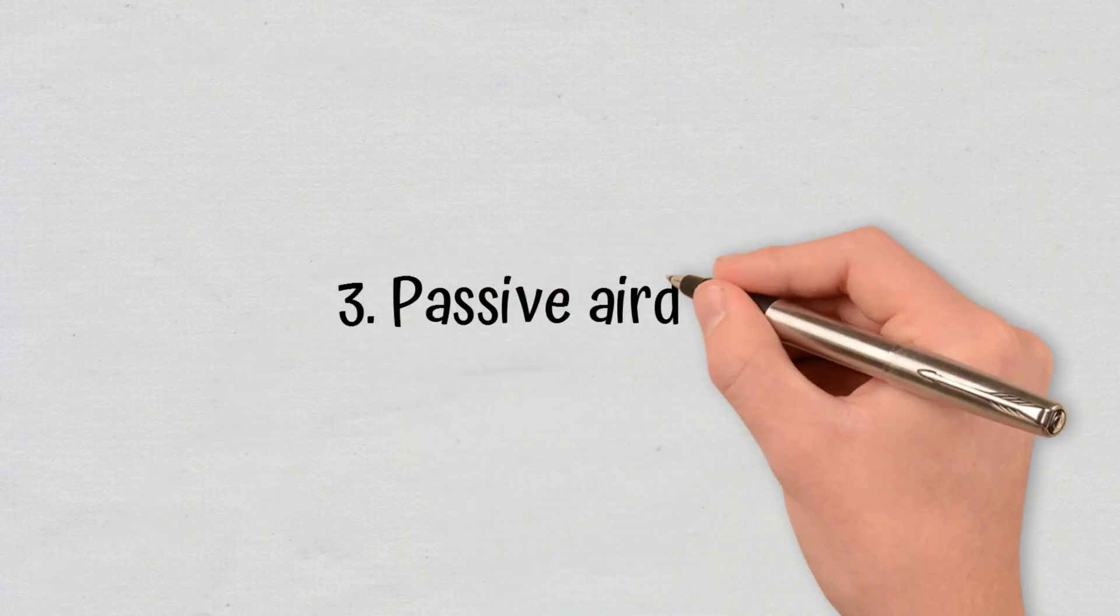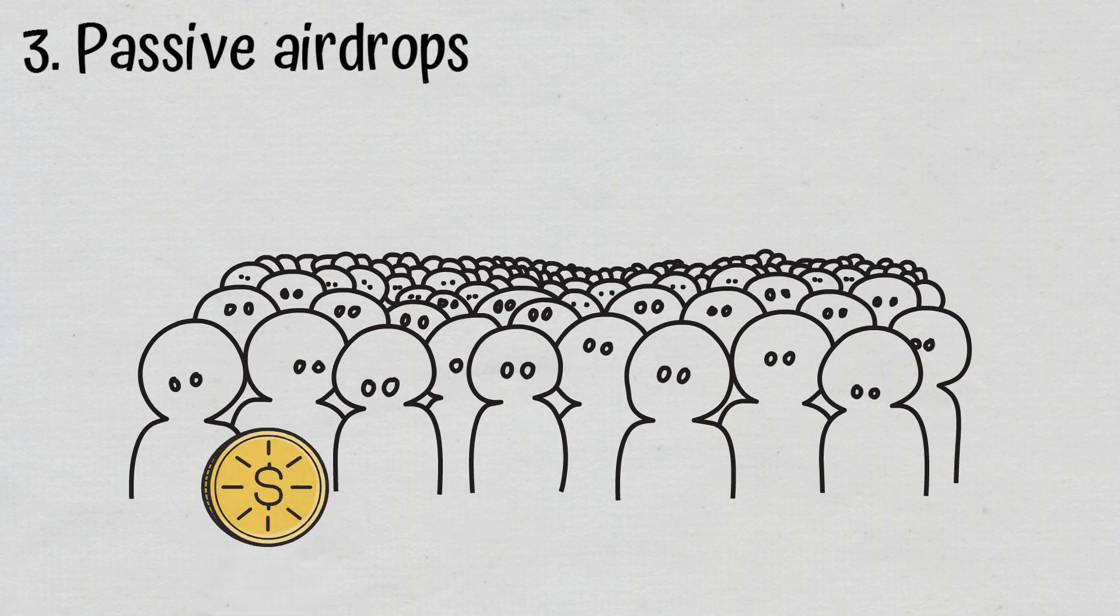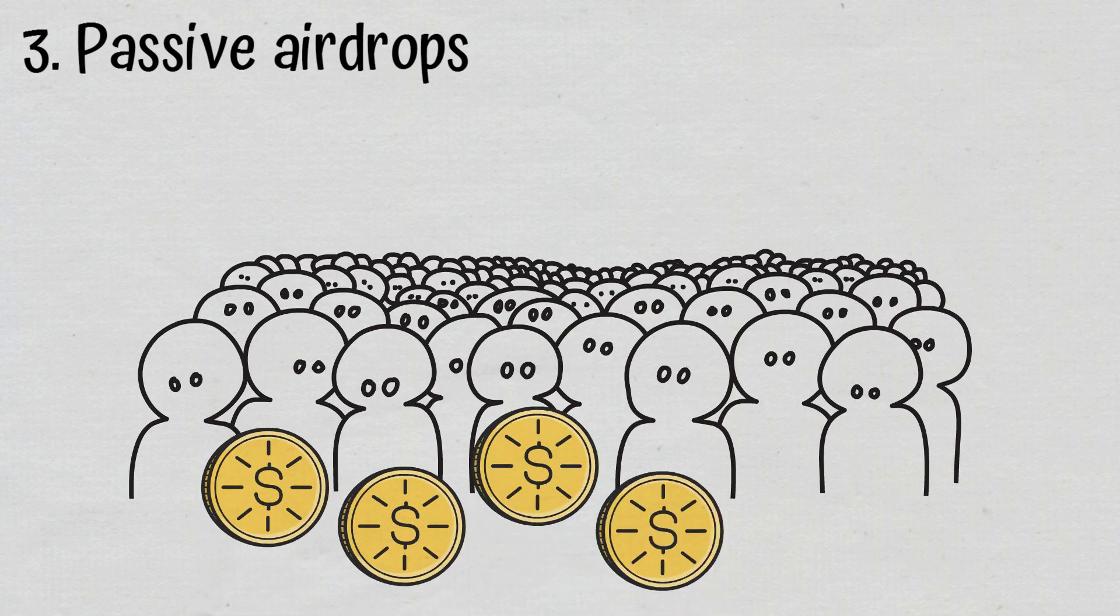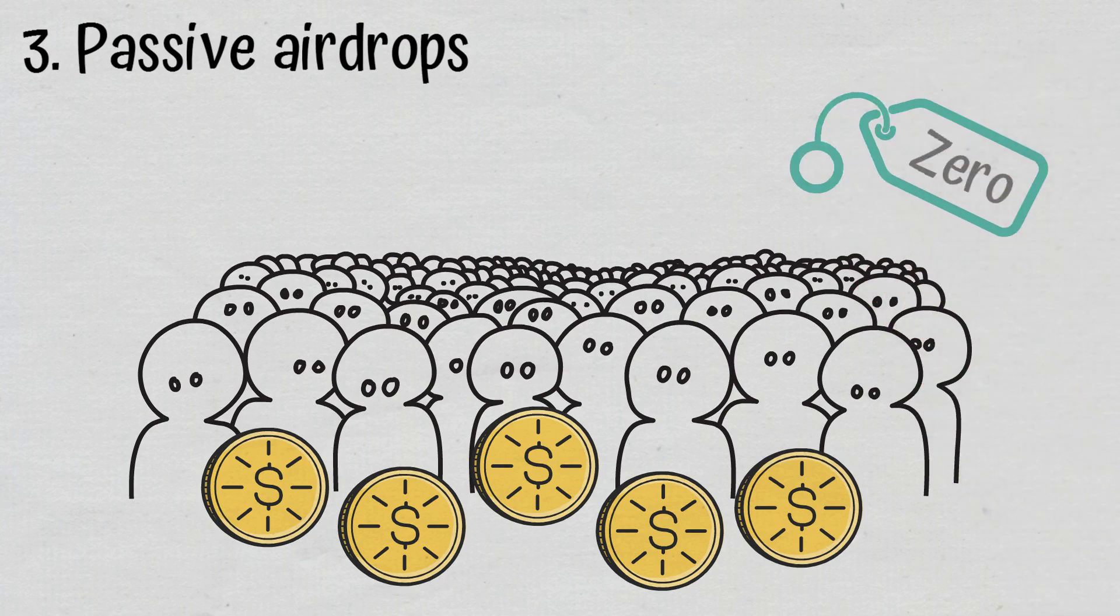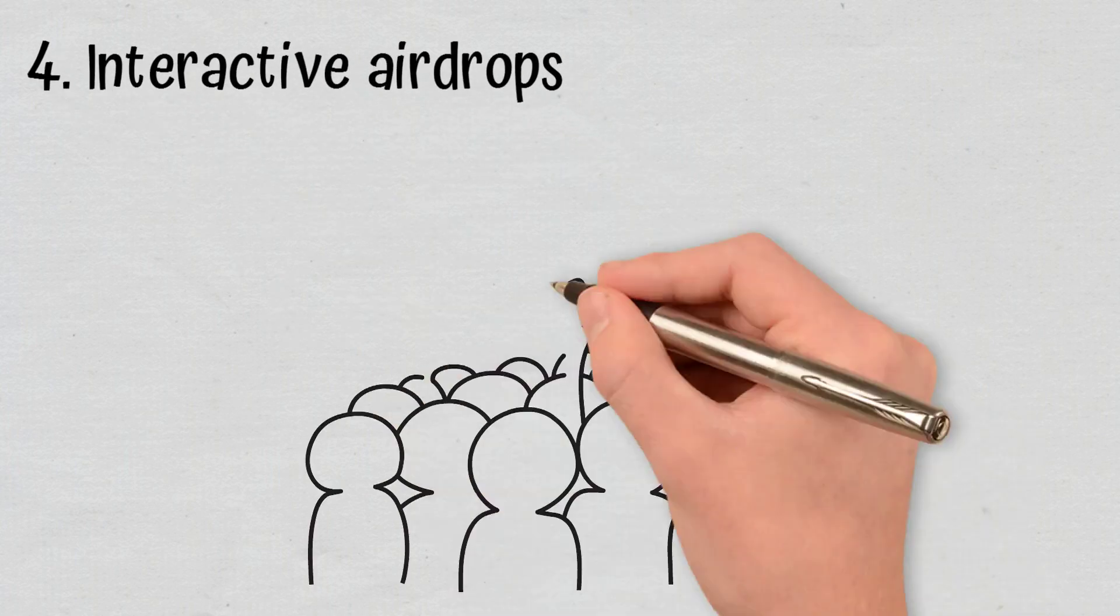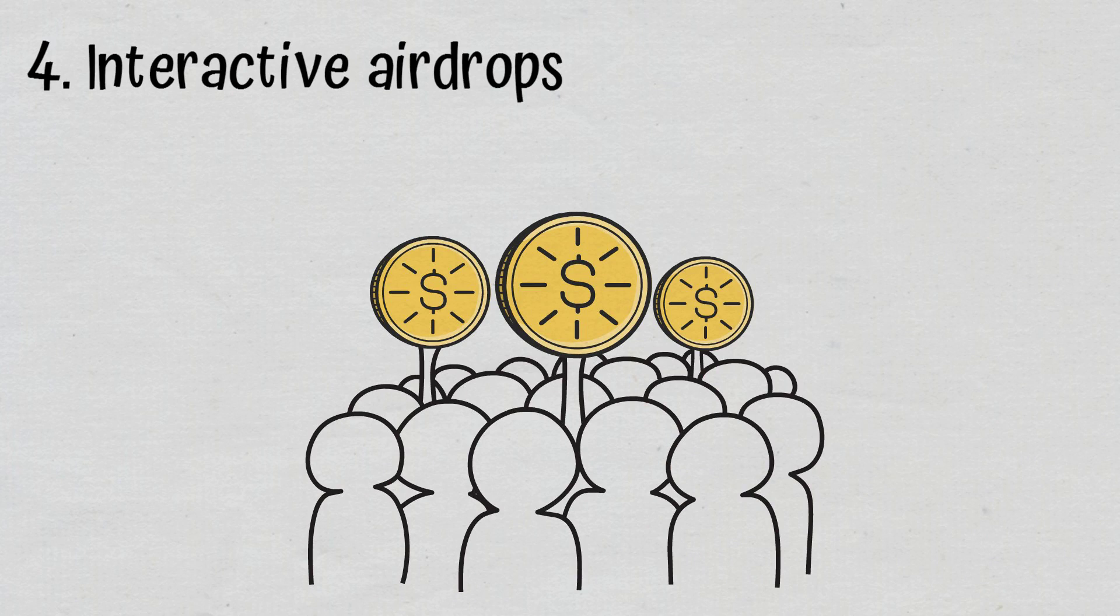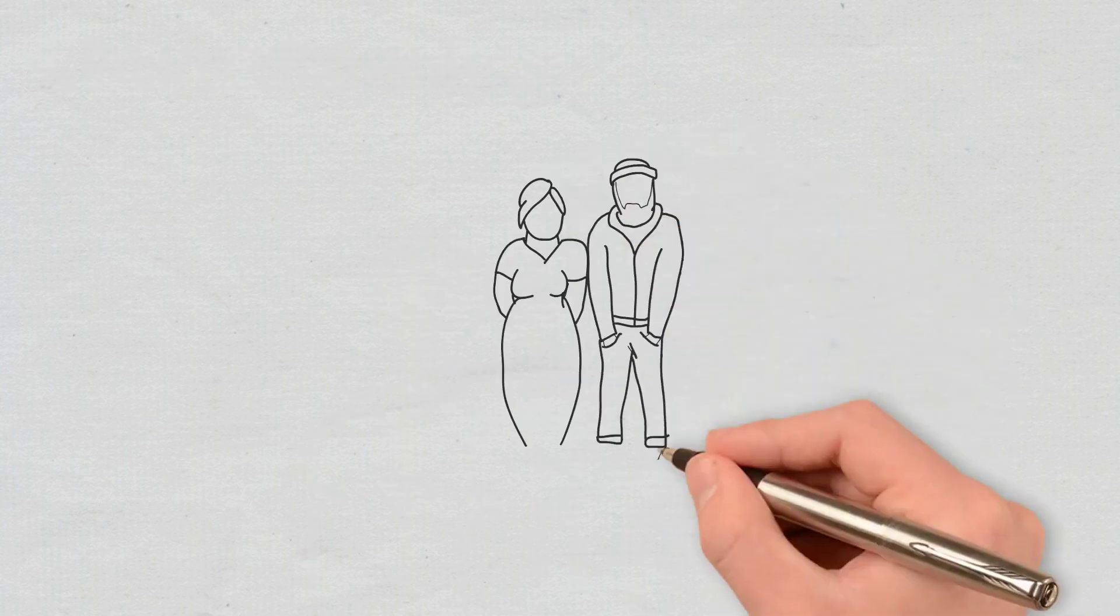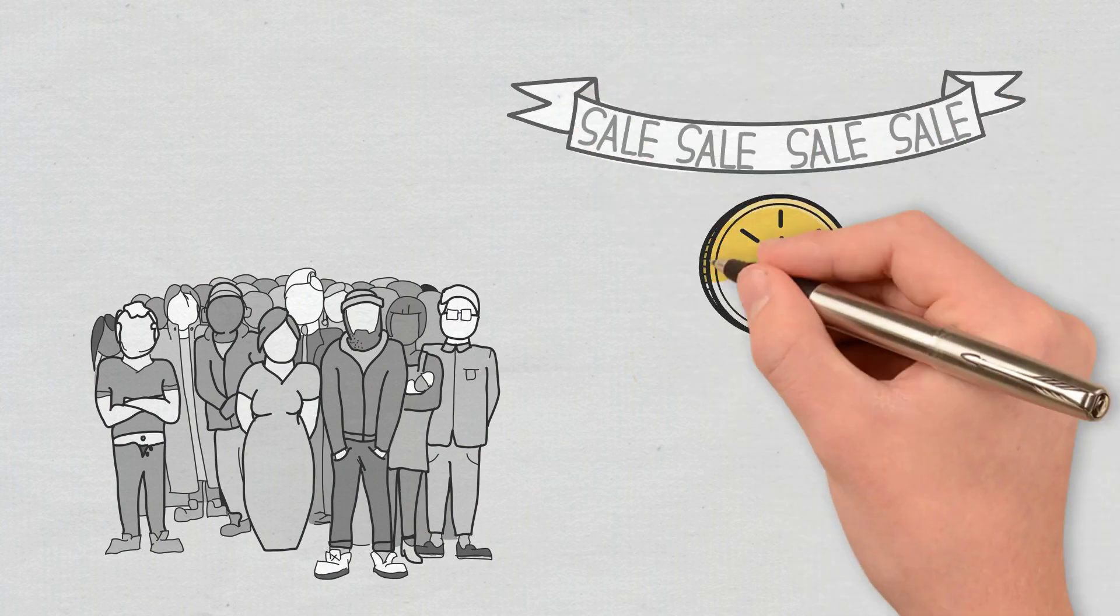Passive airdrops, through which tokens are allocated automatically to passive public participants. The tokens are usually allocated at zero or nominal cost. Interactive airdrops, through which tokens are granted to active public participants at no cost. Recent advancements in this field have also led to community sales and launch auctions.